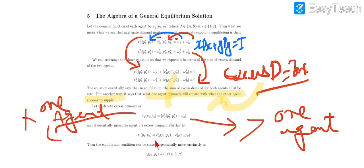Because there can actually be more than two agents, the general equilibrium solution accommodates that. We use z to represent all agents collectively. When all agents collectively have their excess demand equal to zero, that is the point of general equilibrium.